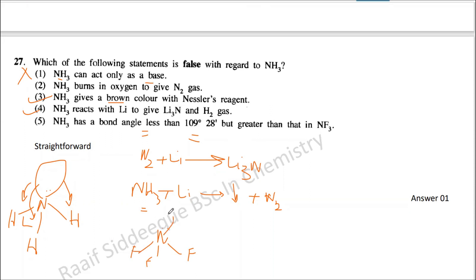The same lone pair is there, but the electron density around this nitrogen is now lower because fluorine is most electronegative and it pulls all the electron density. So now the repulsion from this lone pair gets smaller because there is lower electron density.